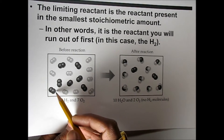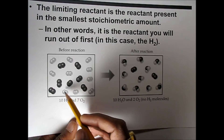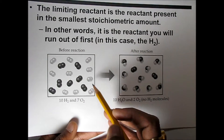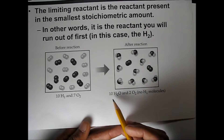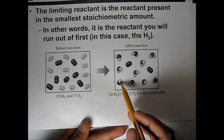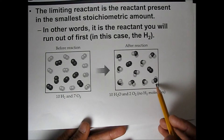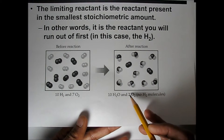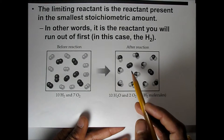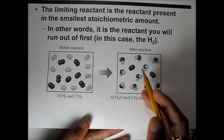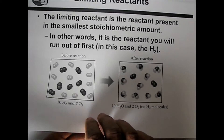The dark balls represent oxygen atoms and the light balls represent hydrogen atoms. Twenty hydrogen atoms react to form only ten water molecules. All the hydrogens are consumed, and two extra oxygen molecules remain. Therefore, hydrogen is the limiting reactant in this case.